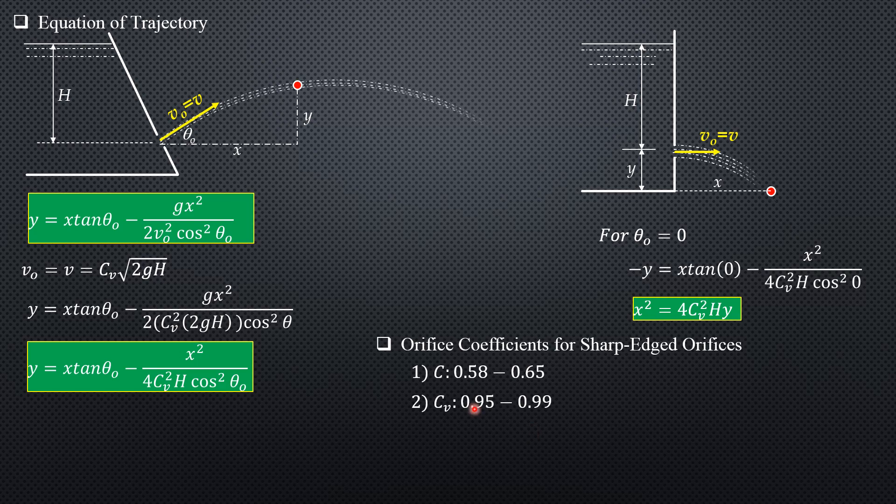And using this range, we can establish the range for C_c, which is from 0.586 to 0.684. But as I said, do not memorize it, just be familiar.